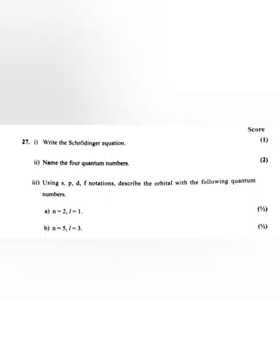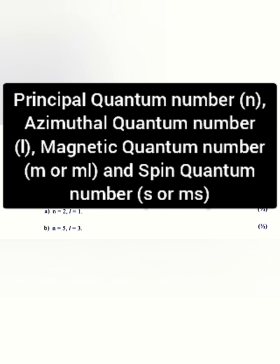Name the four quantum numbers. Answer: Principal quantum number, azimuthal quantum number, magnetic quantum number, and spin quantum number.